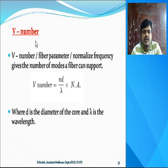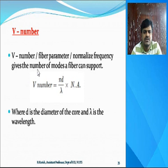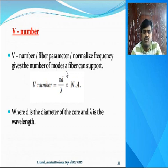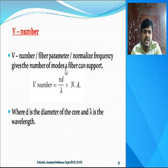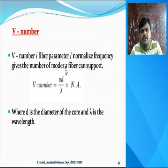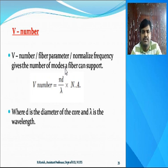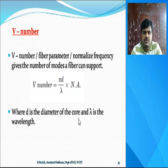The next concept is the V number, also called fiber parameter or normalized frequency, which gives the number of modes a fiber can hold or support. In multi mode transmission, there is a limit to how many modes can be transmitted — that maximum number is represented by the V number. The expression for V number is V = (π × d / λ) × NA, where d is the diameter of the core, λ is the wavelength, and NA is the numerical aperture.